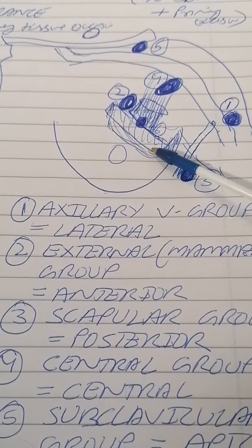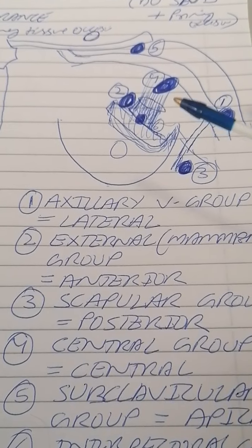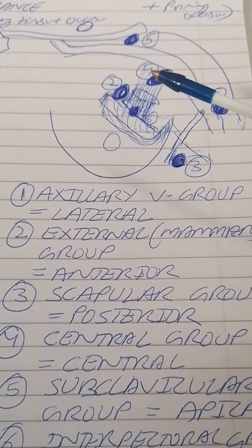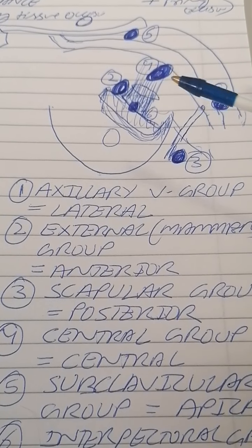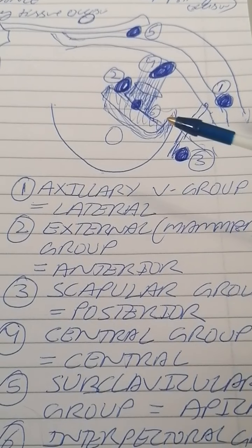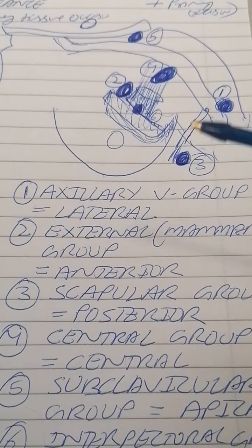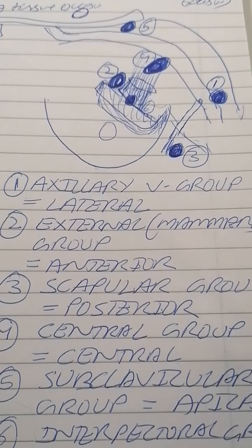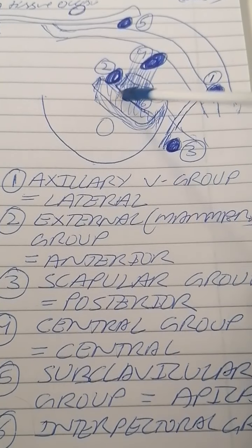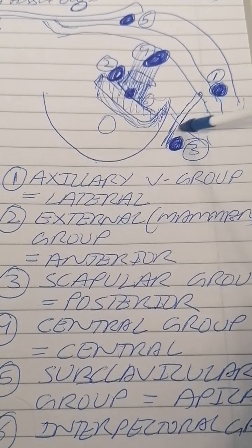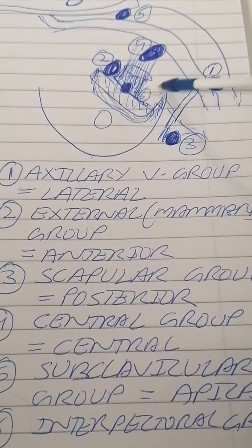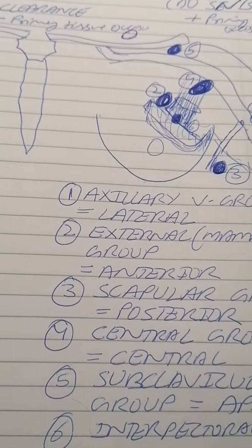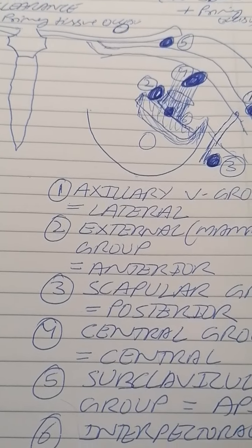If the FNAC result is negative, we proceed with sentinel lymph node biopsy. We inject a dye, identify the first lymph node that takes up the dye — the sentinel node — and biopsy it. We also remove the primary tumor at this stage. So a negative FNAC leads to sentinel lymph node biopsy plus removal of the primary tissue.